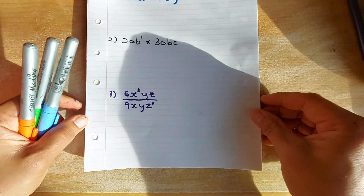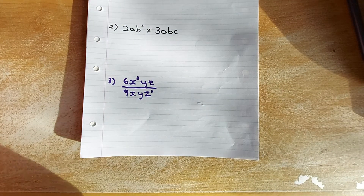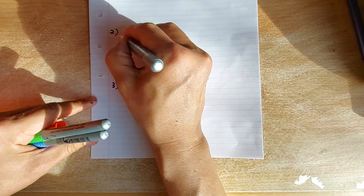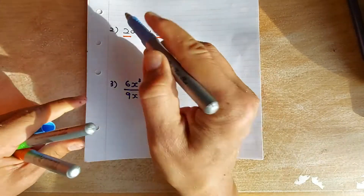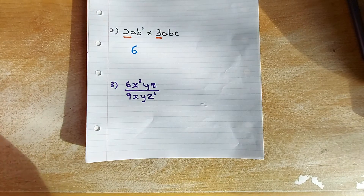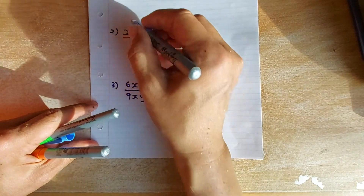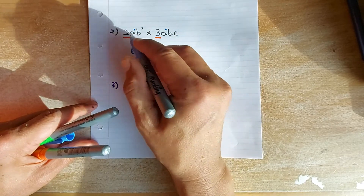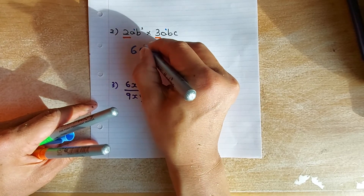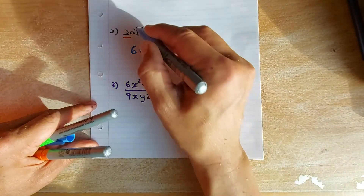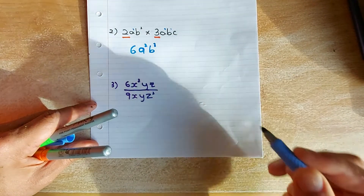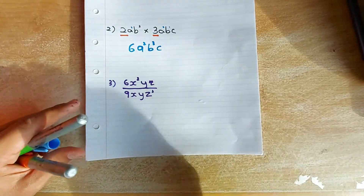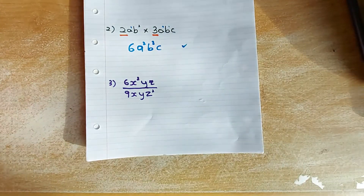The second question is a multiplication question in algebra. You multiply numbers with numbers: 2 multiplied by 3 gives you 6. Then multiply a with a — there's 1 here and 1 here, so you add the powers: 1 plus 1 gives you a squared. For b squared and another 1, 2 plus 1 means b will be cubed. And c on its own, just put c. That's a simple 1 mark.